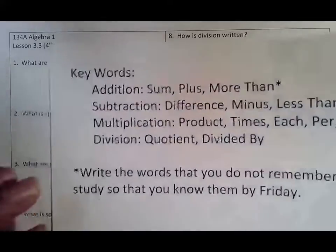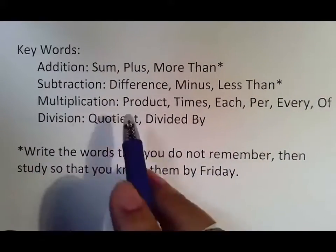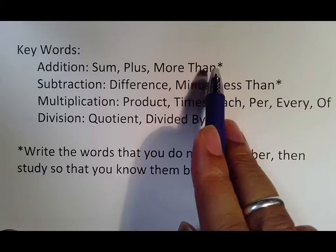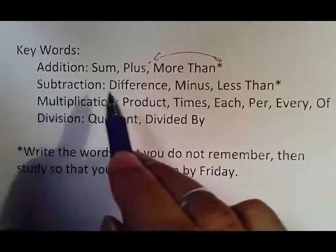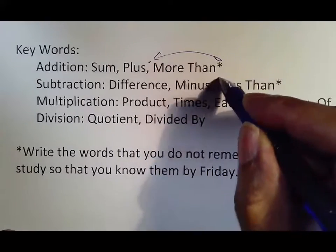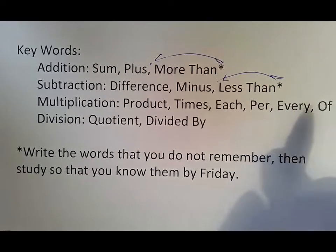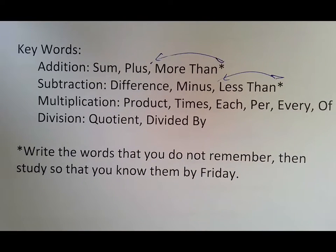Talking about all these words once again, same sheet I've had before. Addition is sum, plus, more than—don't forget the asterisk means that we switch for more than. Subtraction is difference, minus, less than—don't forget we switch for less than, but everything else the order stays the same.